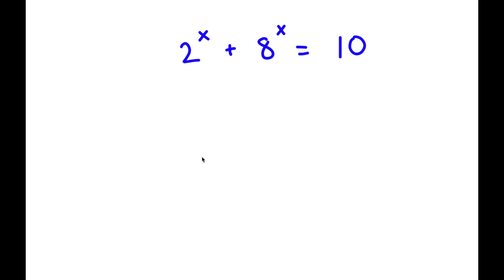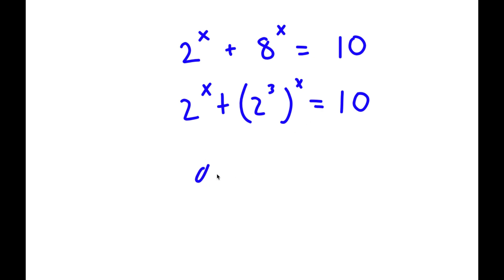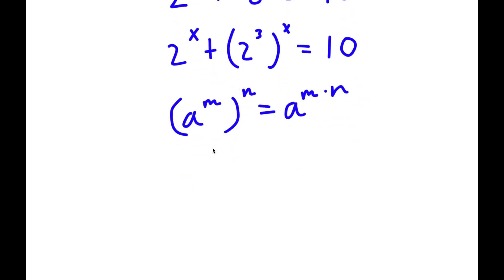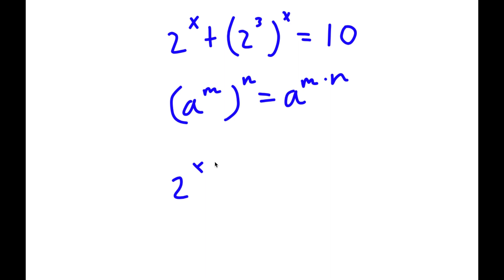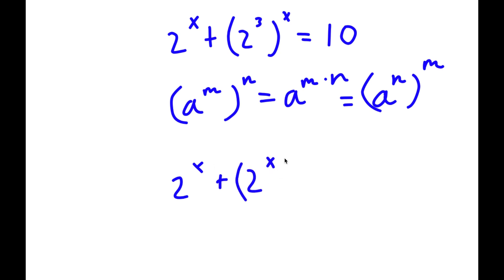In this problem, I have 2 to the power of x plus 8 to the power of x is equal to 10. To solve this, I'm going to first rewrite 8 as 2 to the power of 3. So now I have 2 to the power of x plus 2 to the power of 3, to the power of x, is equal to 10. Now, if I have something in the form a to the power of m to the power of n, this equals a to the power of m times n. I can also rewrite this as 2 to the power of x to the power of 3, simply switching the two exponents.